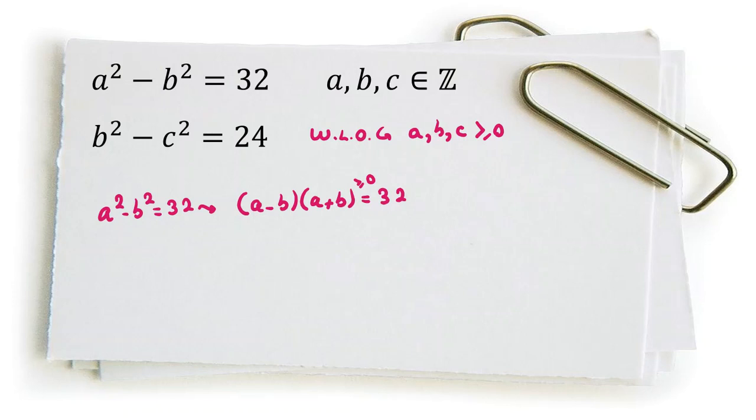this one is greater than or equal to 0. It cannot be 0 because the product is 32, not 0, so it's positive. a minus b is also positive, and a plus b is greater than or equal to a minus b because b is at least 0.